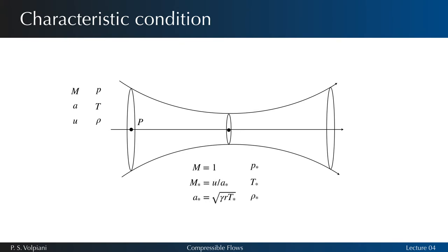This imaginary situation of the flow field when a real state in the flow is brought to sonic state is known as the characteristic condition. The associated parameters are denoted with an asterisk.